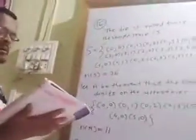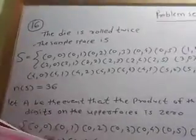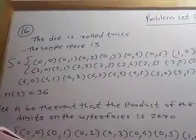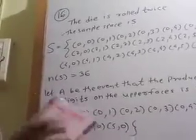Question number 15 complete. Question number 16. The faces of a die are numbered 0, 1, 2, 3, 4, 5. If the die is rolled twice, then find the probability that the product of the digits on the upper face is 0.